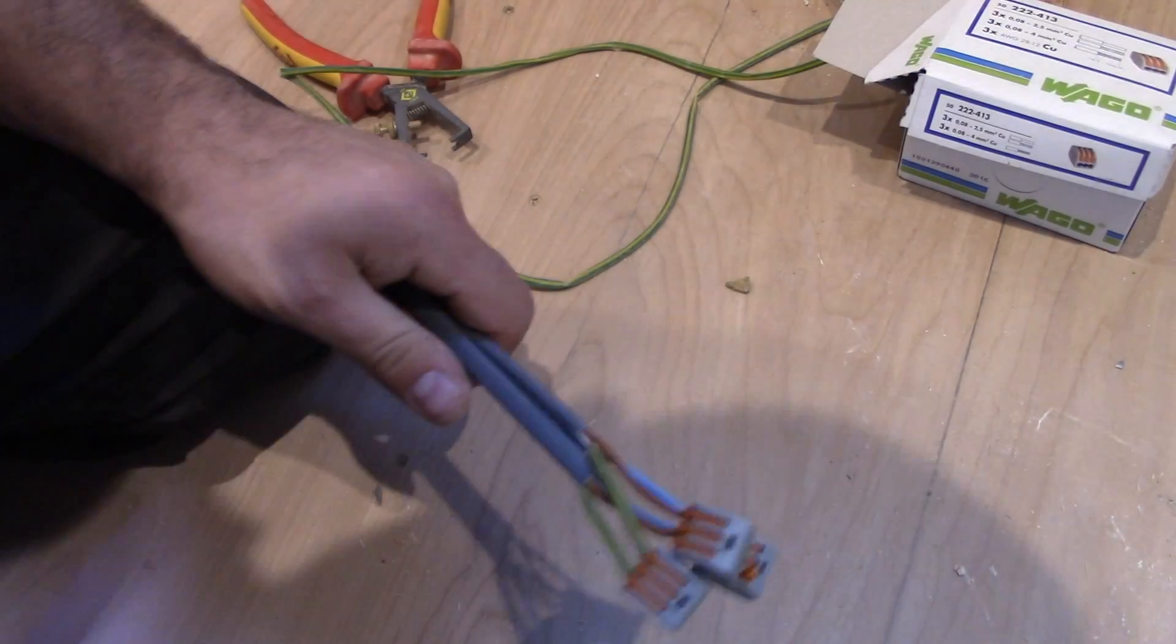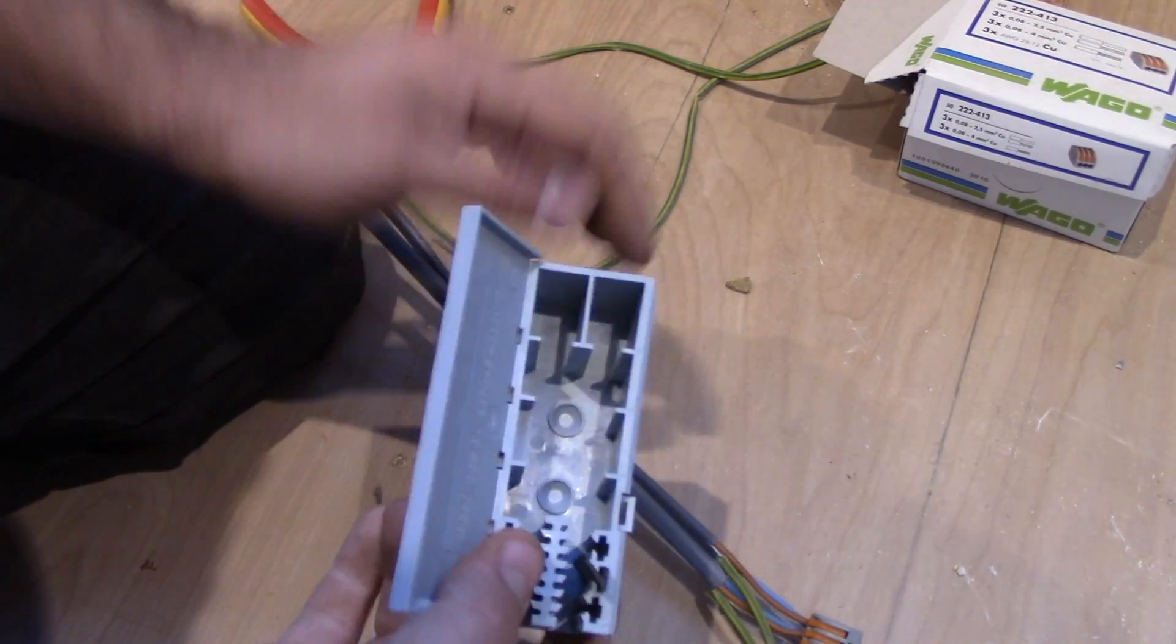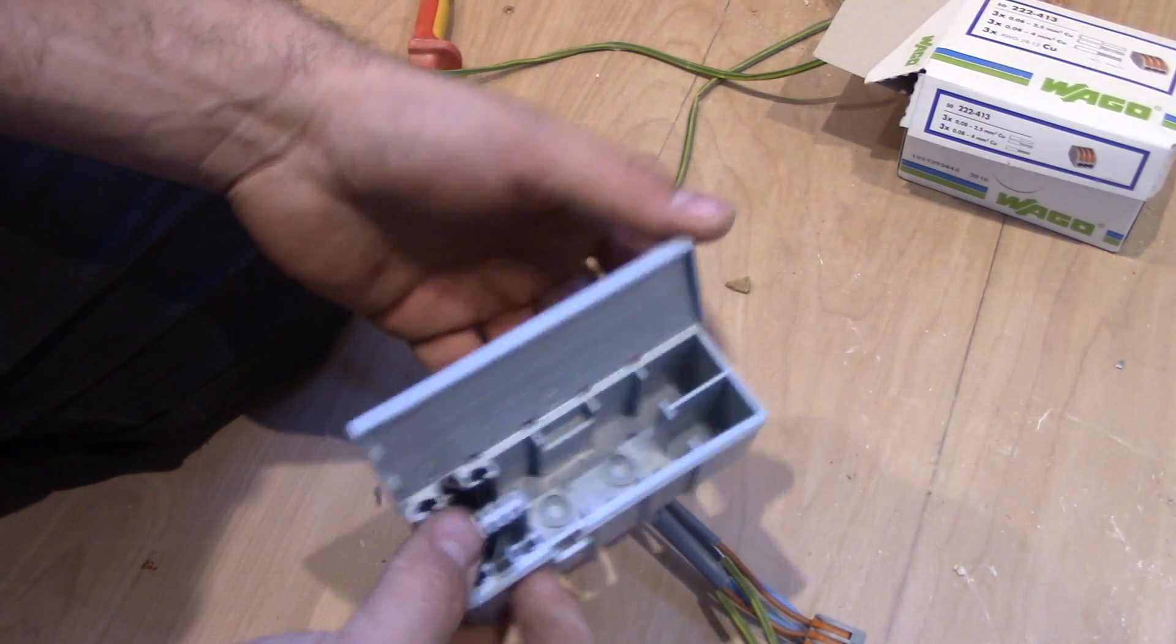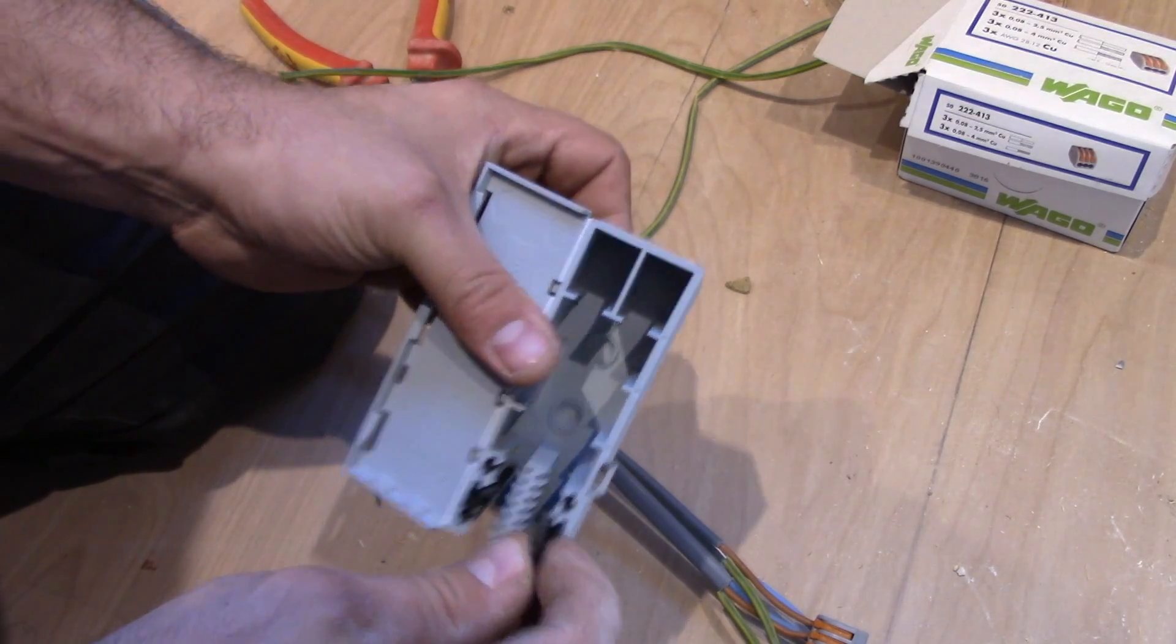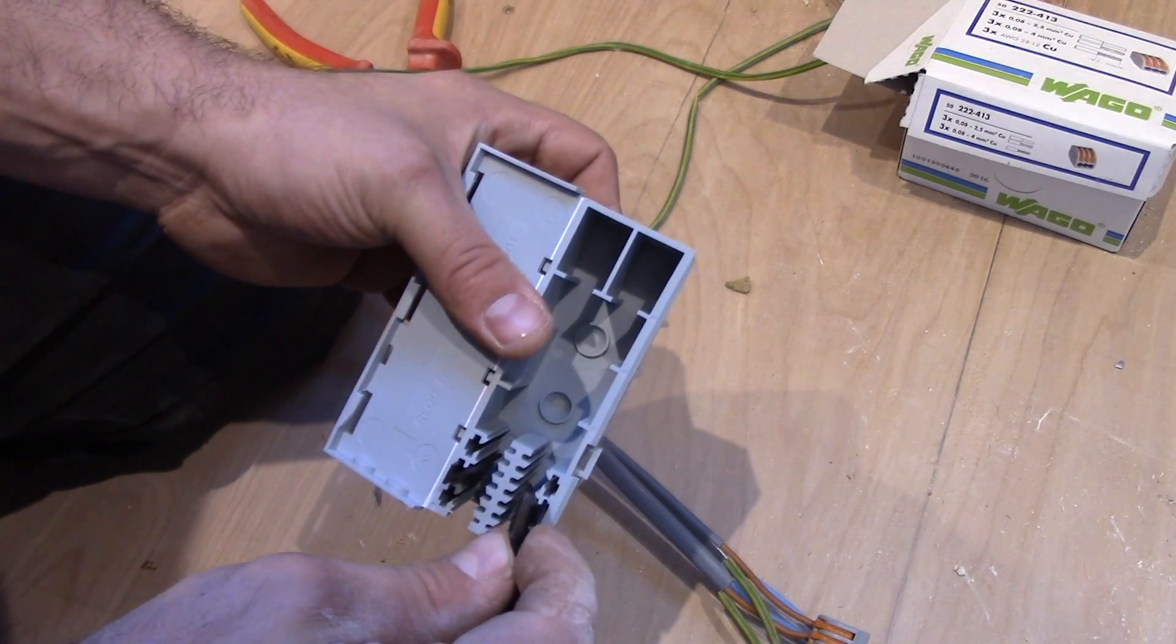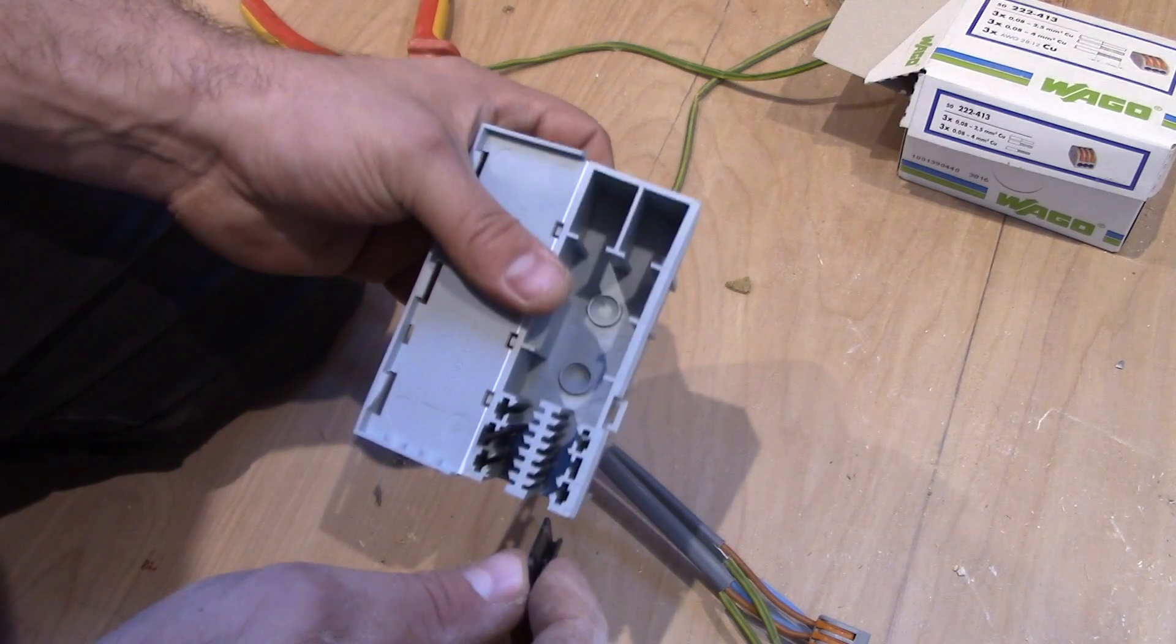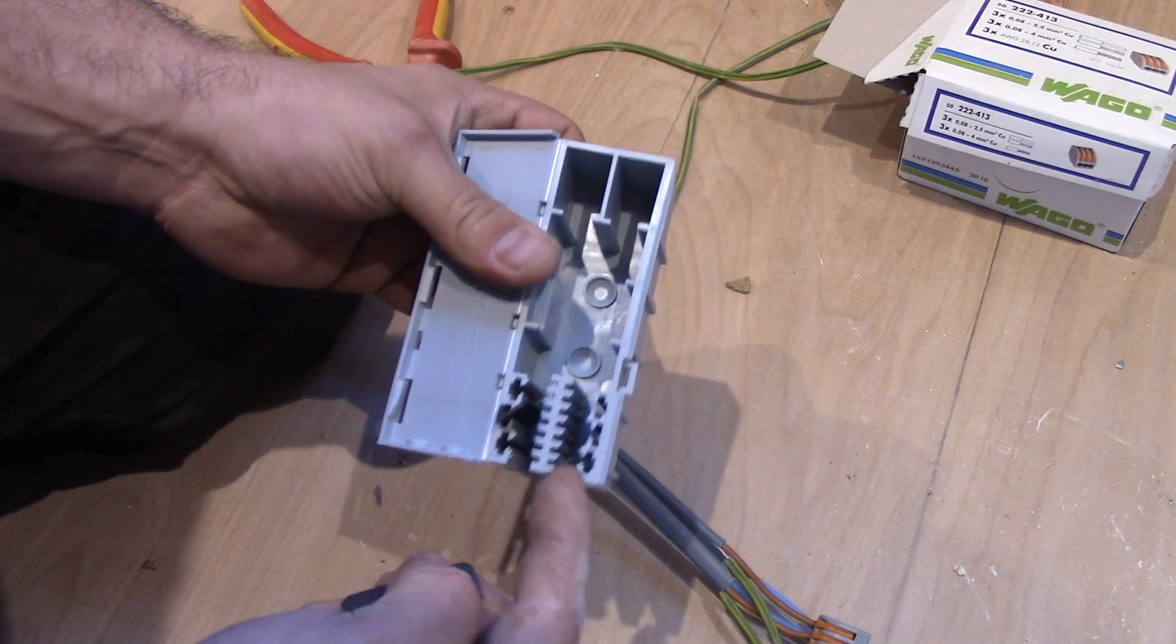All of this you have to fit in the Wago box. Looks like this. It's got rubbers here which you just move, it depends what kind of cable you want to fit through here.